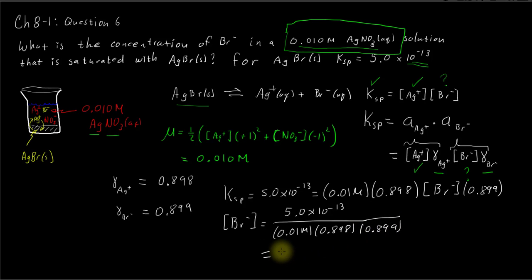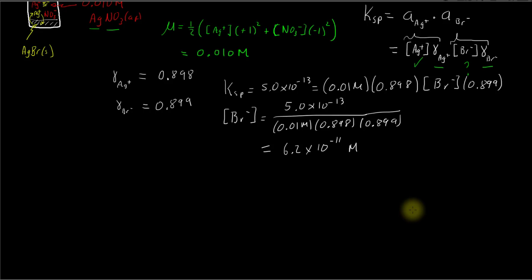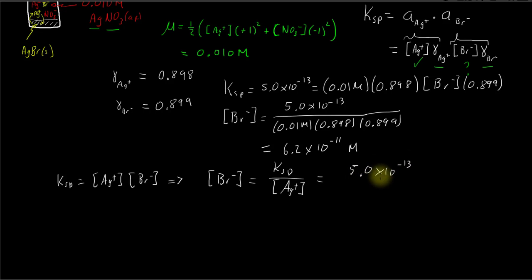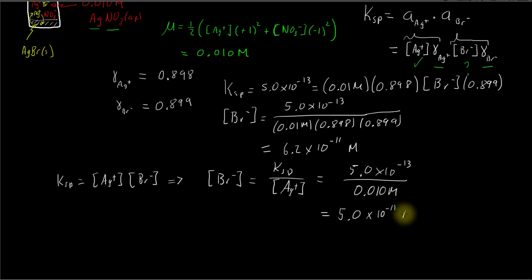Doing the math gives a very small concentration: 6.2 times 10 to the negative 11 molar. That's the answer using activities. As a comparison, let's see what we'd get if we ignored ionic atmosphere effects — just Ksp equals the silver ion concentration times the bromide concentration. Solving for bromide gives Ksp divided by the silver ion concentration: 5.0 times 10 to the negative 13 divided by 0.010 molar, which equals 5.0 times 10 to the negative 11 molar.